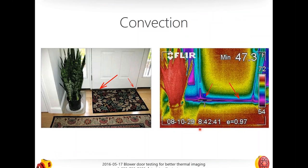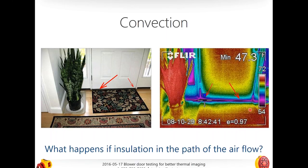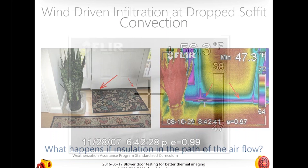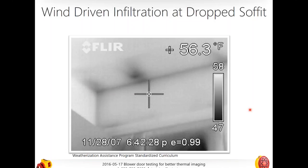Even if we're finding problems with conductive or convective heat loss, what the infrared imager is seeing is heat being radiated or emitted from a solid object — really important to understand. Here's an example of a mobile home before and after it was painted white with a reflective covering. You can see the big difference. For our purposes, though, we're going to talk about convective heat loss — that's where the blower door really meets the thermal imager and it can really help.